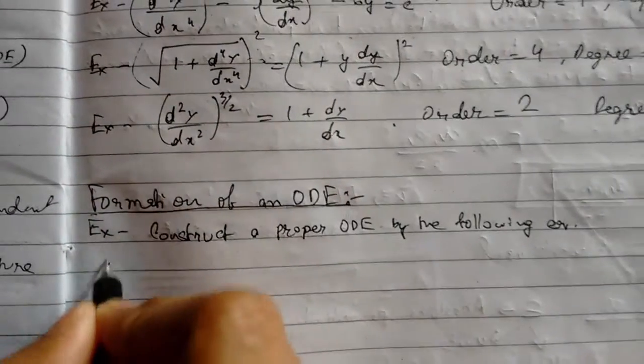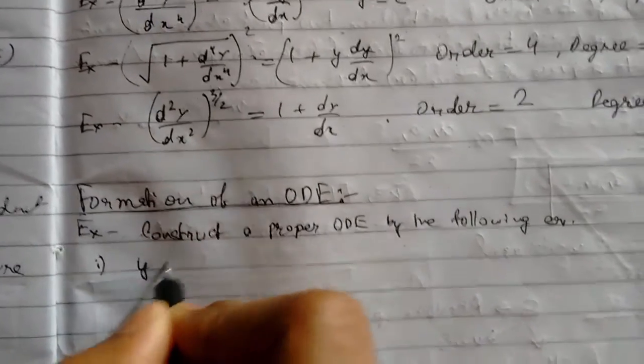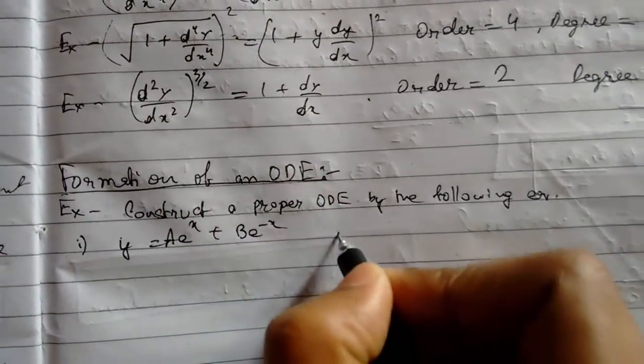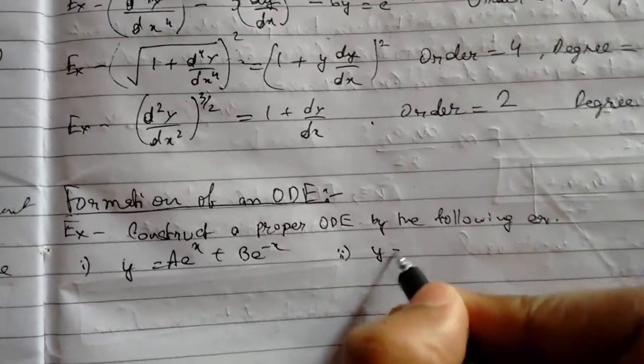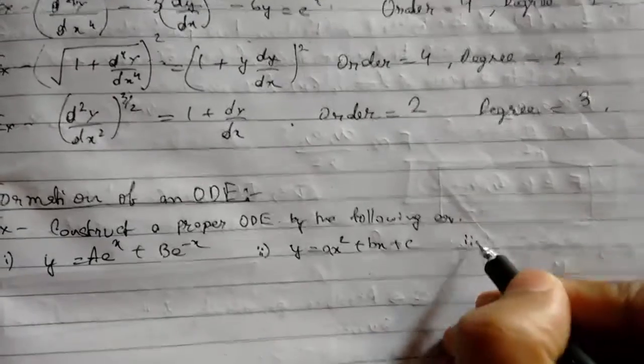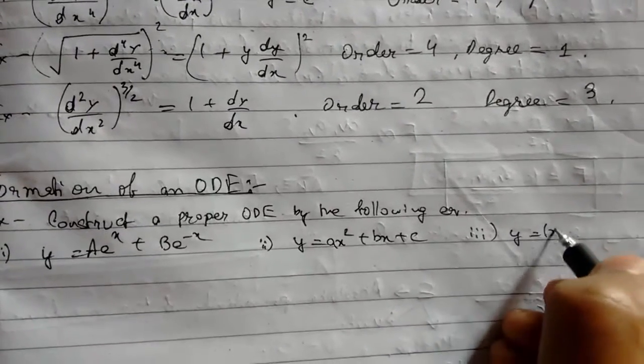We will have three equations: (1) y = ae^x + be^(-x), (2) y = ax² + bx + c, (3) y = lx + m.